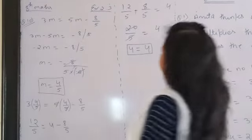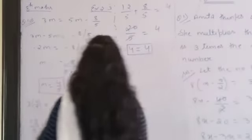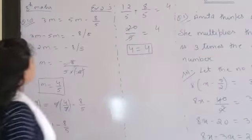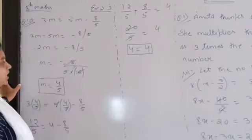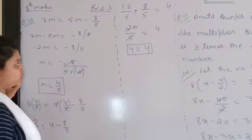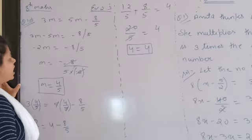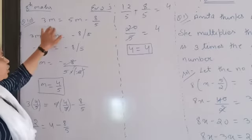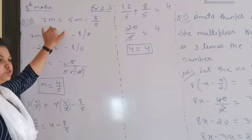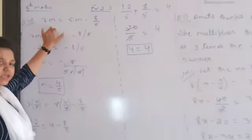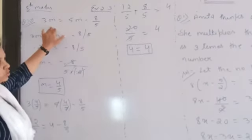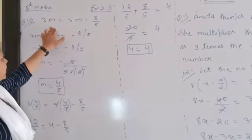Good morning students. Today we are going to talk about the last question, and this question is number 10. We are going to talk about RHS equal to 90.